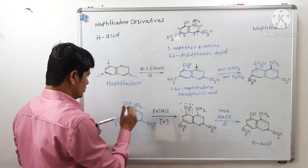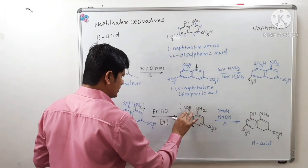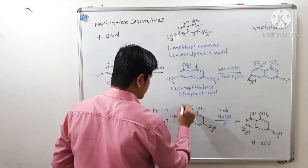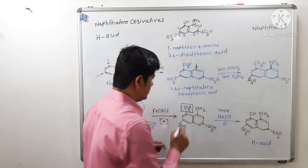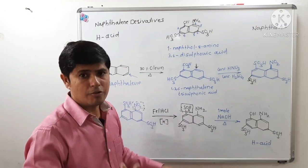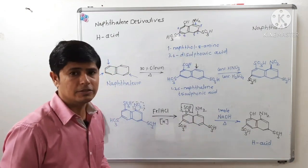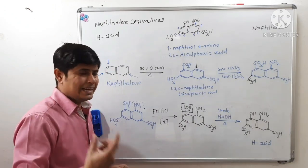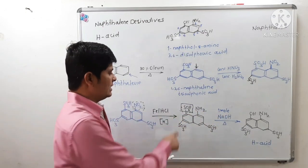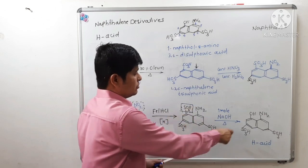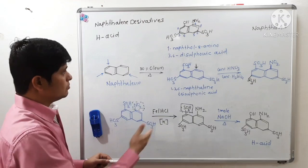In the next step, there will be replacement of this sulfonic acid group by one mole of sodium hydroxide. If we use excess sodium hydroxide, this other sulfonic acid group will also get converted into hydroxyl. So we want selectively only one sulfonic acid group converted into hydroxyl; hence, we use one mole of sodium hydroxide. This gives replacement of this sulfonic acid group by hydroxyl, and the final product is called H-acid.